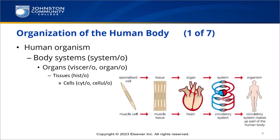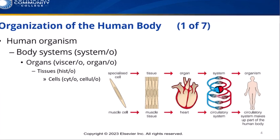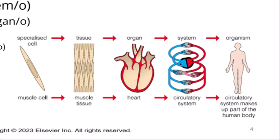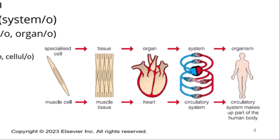Each organ is composed of a variety of tissues. The combining form for tissues is histo. The four types of tissues are muscular, epithelial, connective, and nervous. Finally, cells make up tissues. Notice the combining forms cyto and cellulo. Here's a good image to help you remember: cells make up tissue, tissues make up organs, organs make up systems, and systems make up an organism.